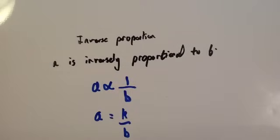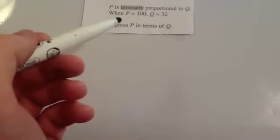Let's have a look at an example. P is inversely proportional to Q. When P is 100, Q is equal to 32. Express P in terms of Q. So, in other words, get the formula where it's P equals.